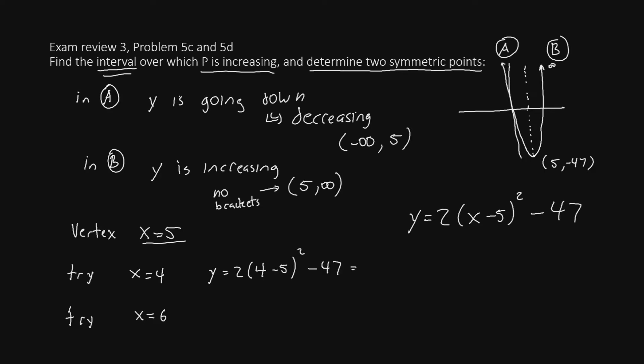Let's do the math here. 4 minus 5 is just negative 1. Squared gives positive 1. We'll have 2 times 1, minus 47. If we do the operations here, we'll have 2 minus 47, which is negative 45. So our first symmetric point is going to be x, y. The x we had was the 4. The y that we ended up with when we did the math was negative 45.